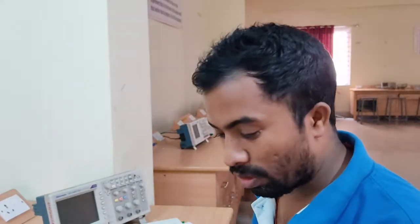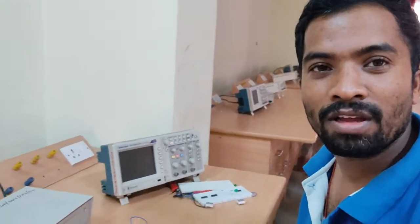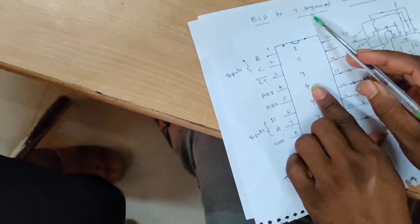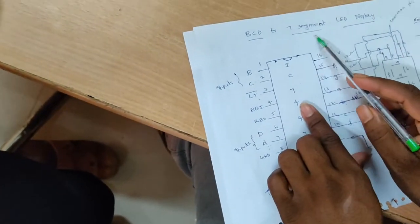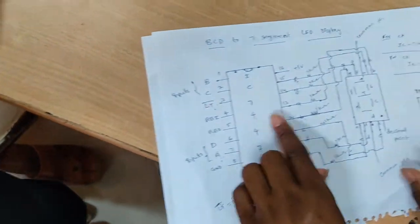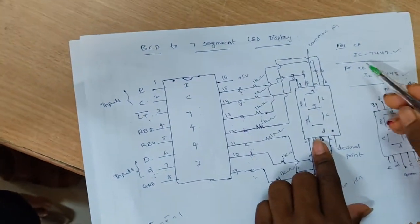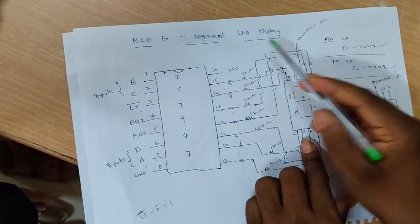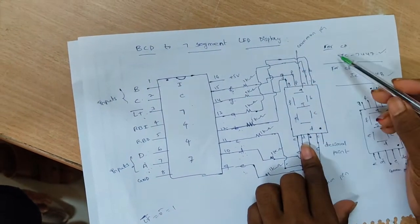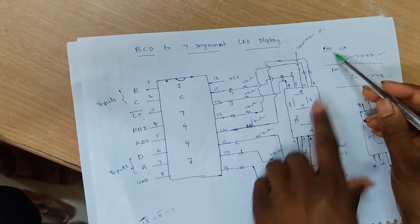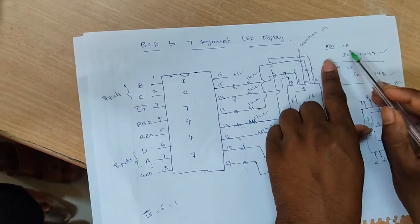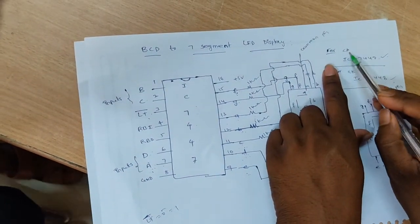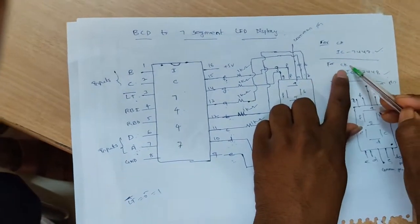Hi students, today's experiment is the BCD to 7 segment LED display. LED displays are two types: common anode and common cathode.